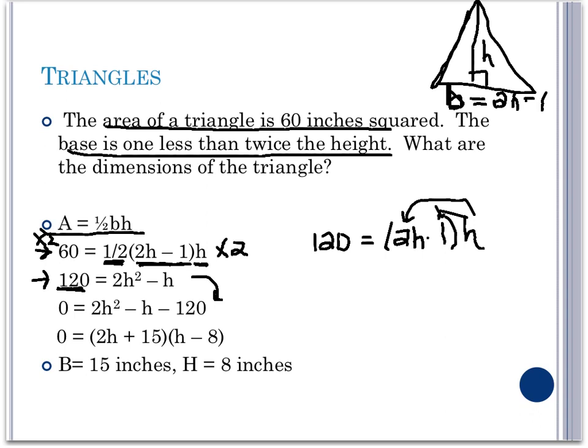We could factor this using that method of factor by grouping. Therefore, we're looking for two terms that multiply to a times c, or 2 times a negative 120, which is equal to a negative 240. And we want these two numbers to add to that middle term, which is negative 1. We could verify that this would be a positive 15 and a negative 16.